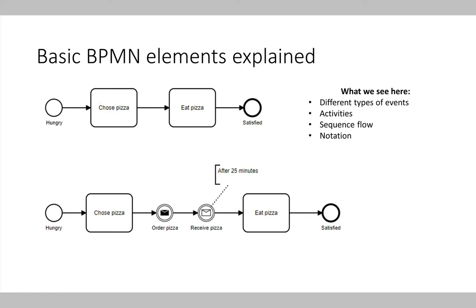Activities are connected in the process using sequence flows, and sequence flows are simply small arrows connecting activities. Each activity needs to be connected to an ingoing and outgoing sequence flow. Furthermore, there are events — events show that something happened outside or inside the process.